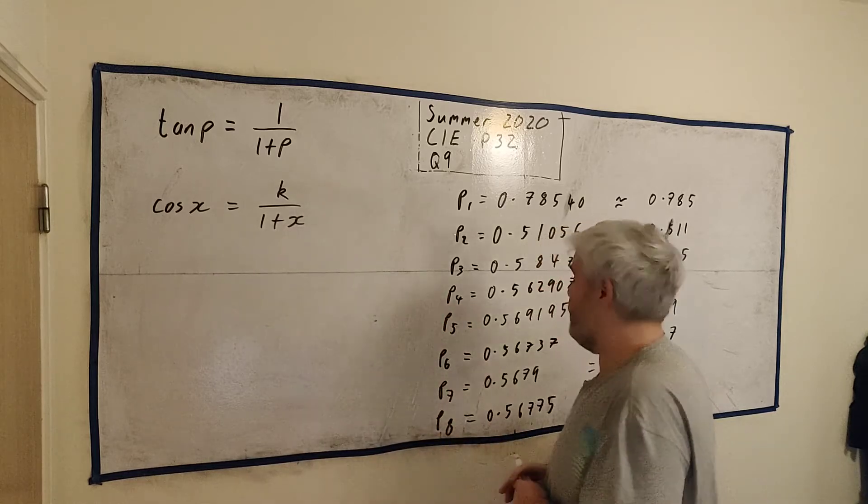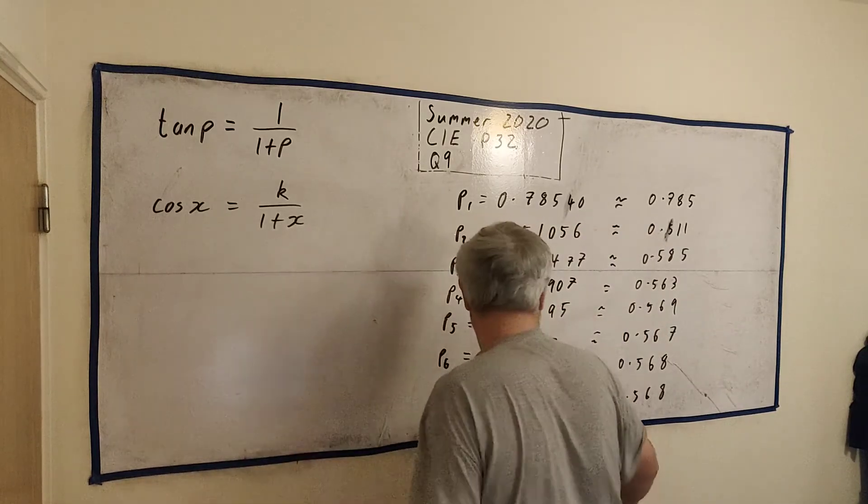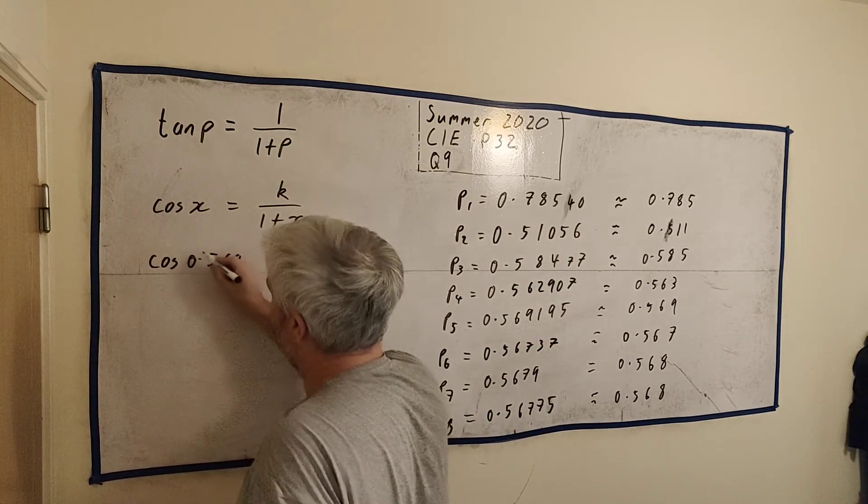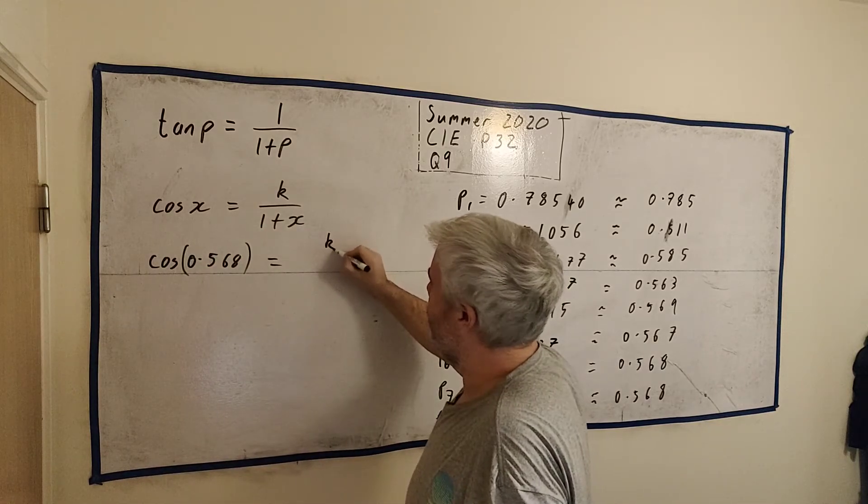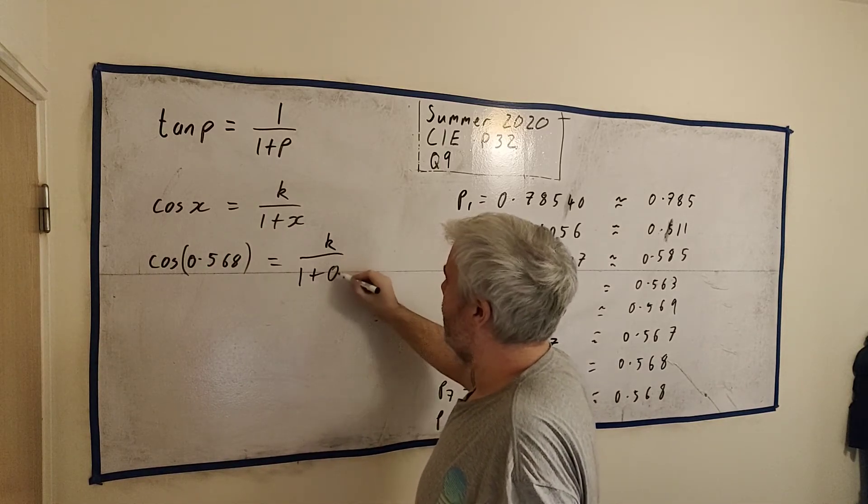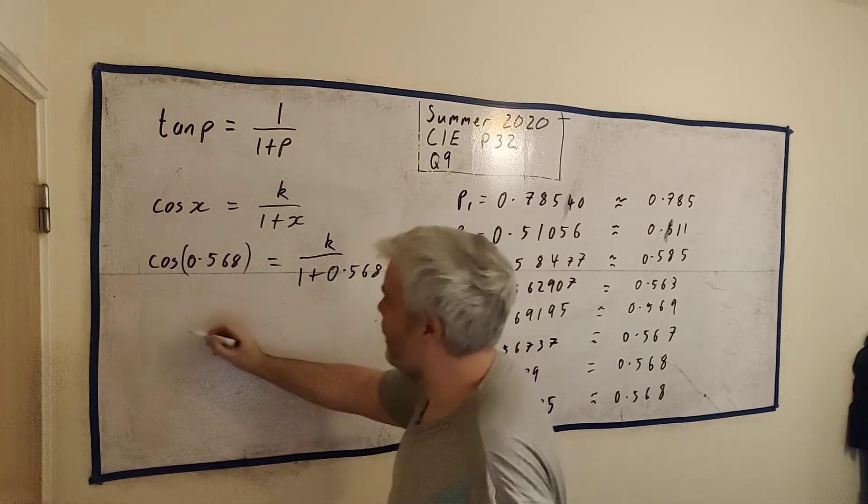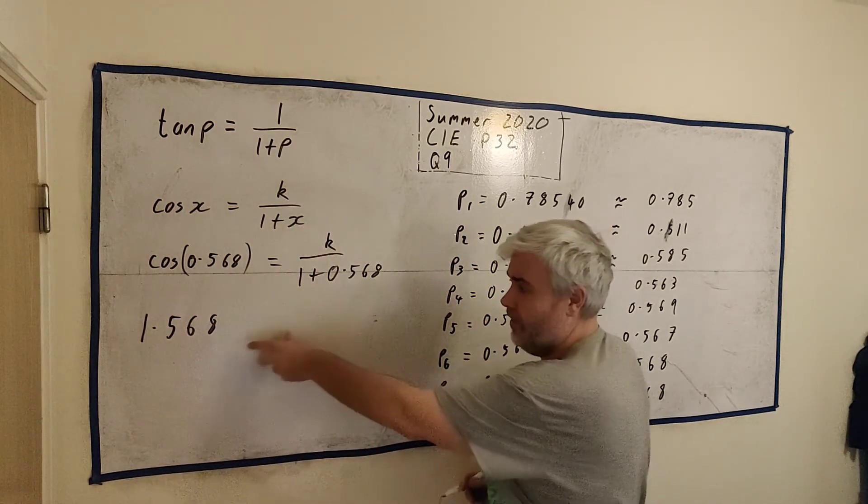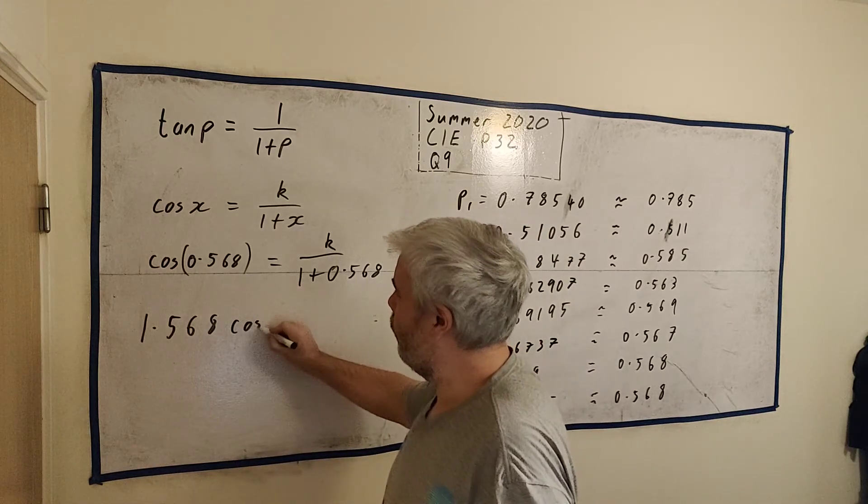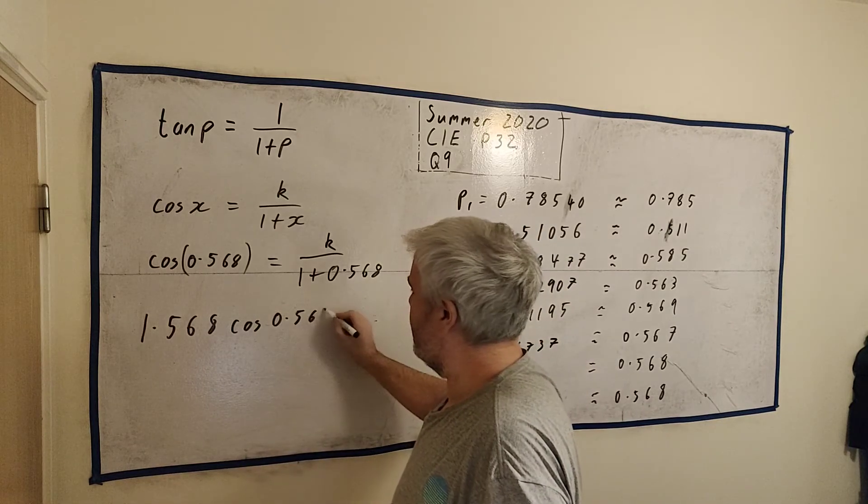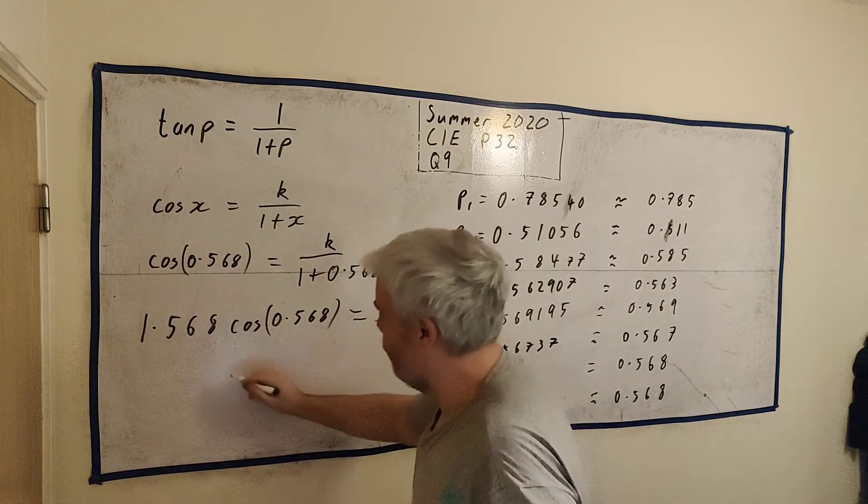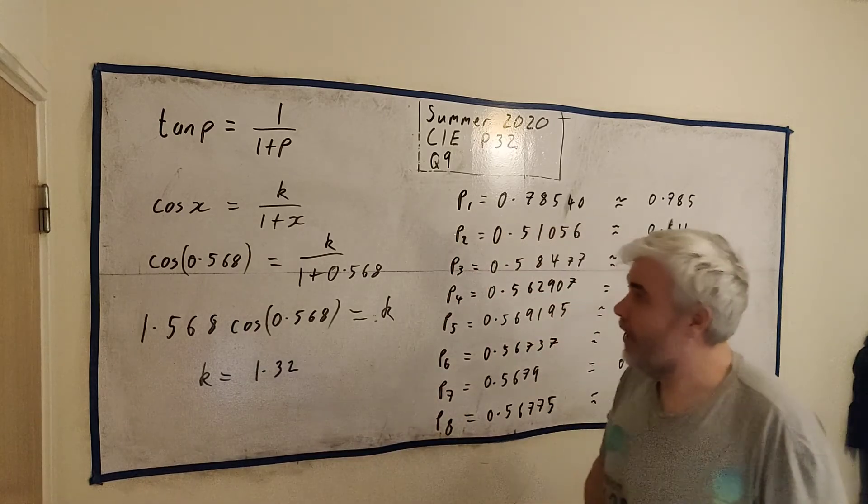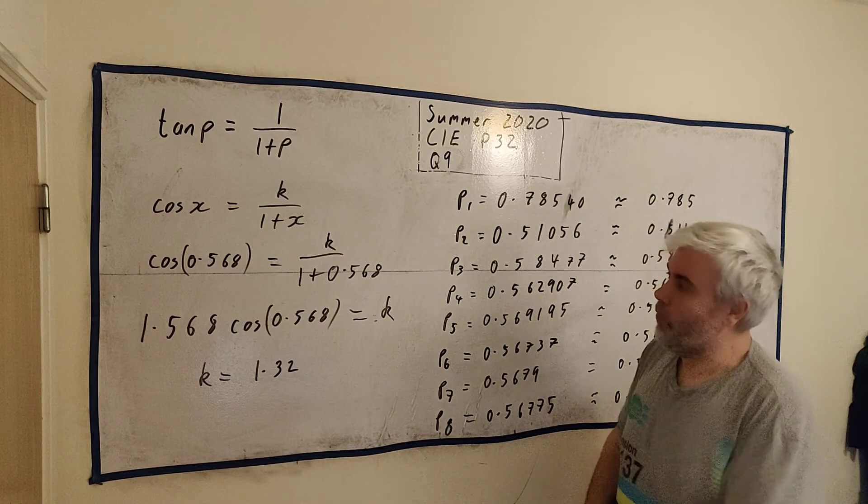Remember, we now know what X is, or P, you could say. We now know that this is cosine of 0.568, approximately anyway, is equal to K over 1 plus 0.568. If I rearrange this, I get 1.568. Sorry, that's just 1 plus this. This is multiplied by cosine 0.568, and that is equal to K. So, just put that in the calculator. We will get K is equal 1.32. And that's the full question.